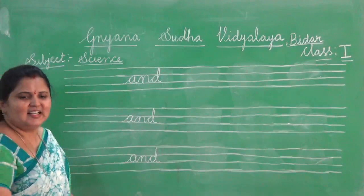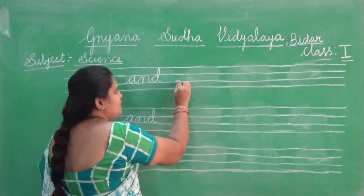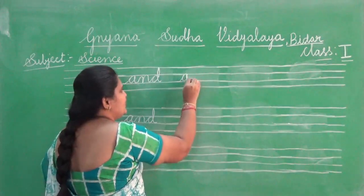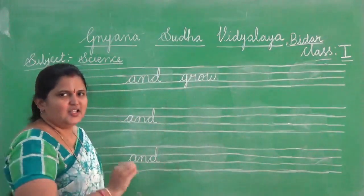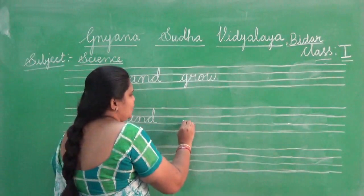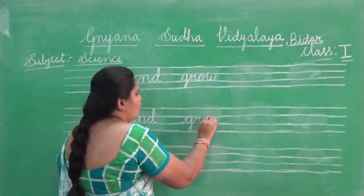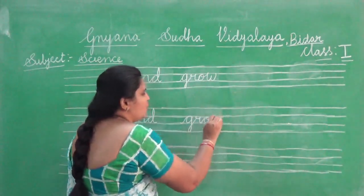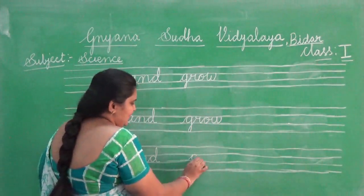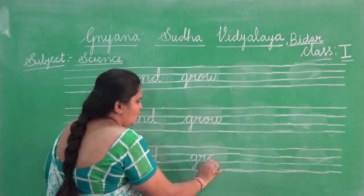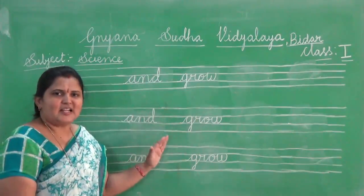Next four letter word is GROW. G — you are going to touch in between two lines and the lower line. R, O, W. Grow. Look at the board once again. G, R, O, W. Grow. I repeat once again. Look at the board. G, R, O, and W. Grow. You are going to write these words five times in your homework notebook.